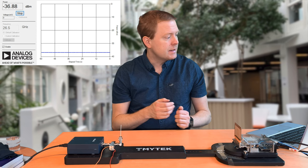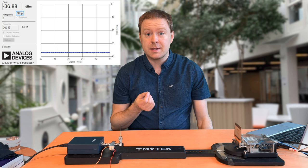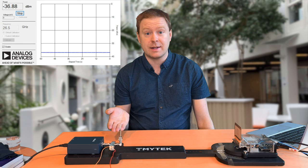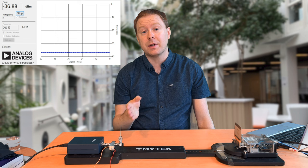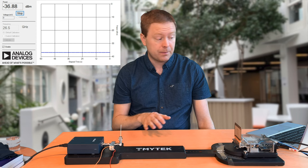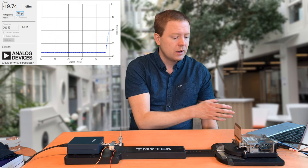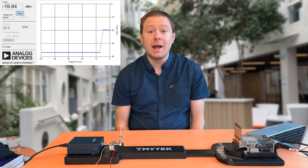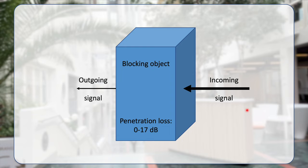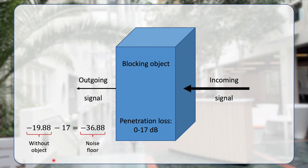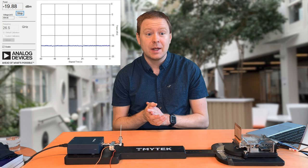Right now the transmitter is off. The receiver is still showing minus 36.88 dBm, which is the noise in the receiver — as low as it can get. We need to remember this number because if an object blocks the signal completely, we can no longer detect it above the noise floor. Turning on all the transmit antenna columns, we now have a received signal power of roughly minus 19.88 dBm. So we can detect penetration losses down to 17 dB — beyond that, we are at the noise floor and cannot determine whether the loss was larger.